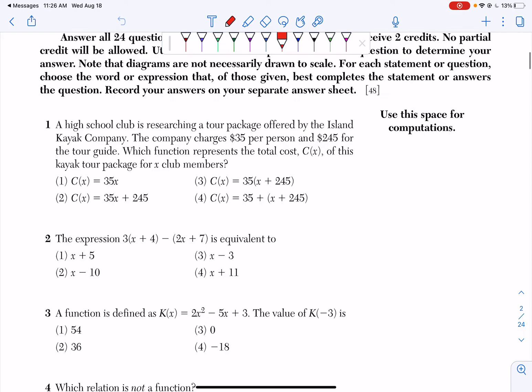Question number one says a high school club is researching a tour package offered by the Island Kayak Company. The company charges $35 per person and $245 for the tour guide. Which function represents the total cost, C(x), of this kayak tour package for x club members?